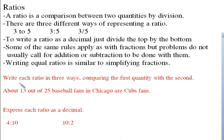If we look here, write each ratio in three ways comparing the first quantity with the second. If we were to say 13 out of 25 baseball fans in Chicago are Cubs fans, the first way we would write that is to go ahead and say 13 to 25.